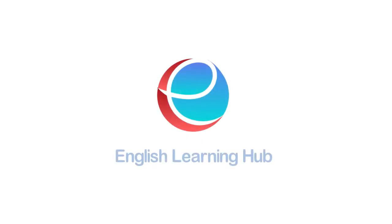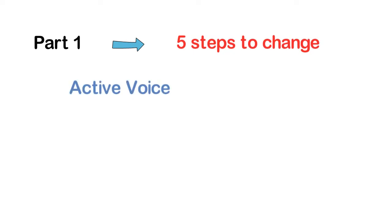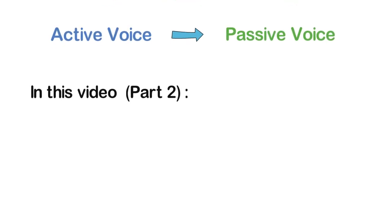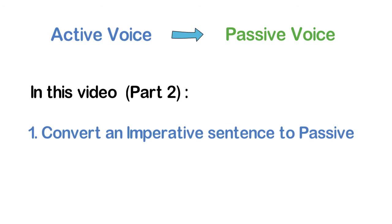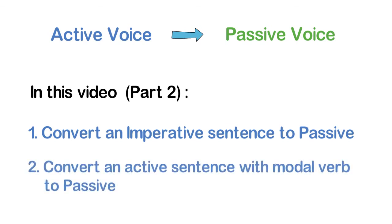Hey everyone, and welcome to English Learning Hub. In part 1 of the active and passive voice series, we learned 5 steps to change an active sentence to passive. In this video, we are going to learn: 1. How to convert an imperative sentence to passive, and 2. How to convert an active sentence with a modal verb to passive. Now, let's get started!